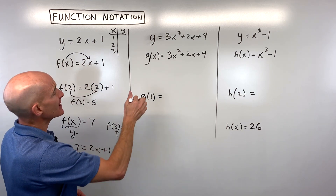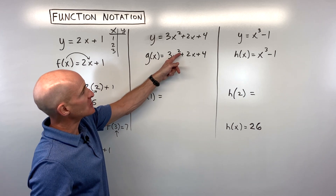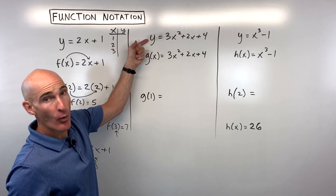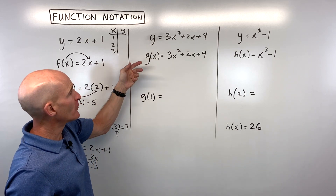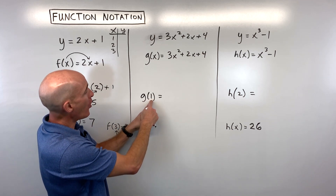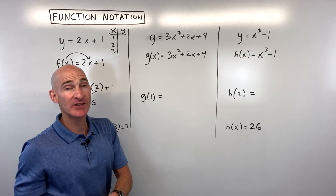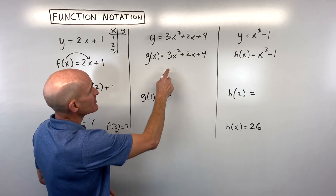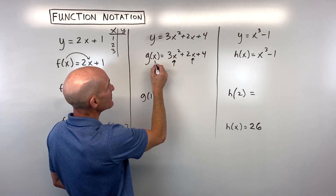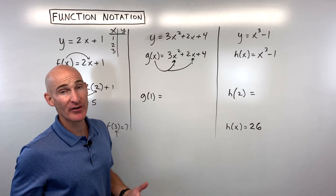Let's take a look at another function: g of x is equal to 3x squared plus 2x plus 4. You can think of g of x just like y — our output. If they say what's g of 1, that's really saying that if I put 1 in place of x, that's going to be my output. Notice there's an x here and here — whatever's in parentheses goes in for x on the right side, no matter how many different x's there are.